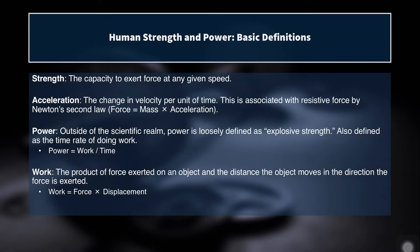Let's get into the material. Before we talk about factors affecting strength and power, we have to know what strength and power are. Strength is the capacity to exert force at any given speed. That last bit — at any given speed — is important. The reason why our strength is limited by speed is because down at the level of the muscle fiber, there are certain contractile velocity components of muscle.